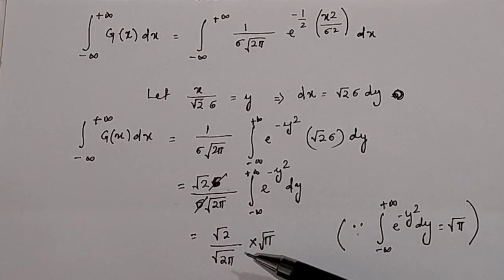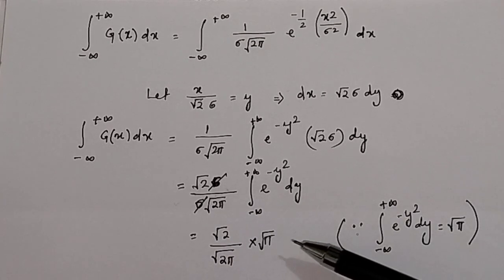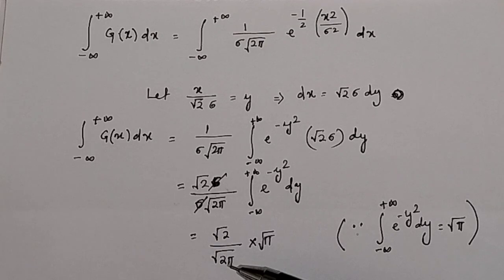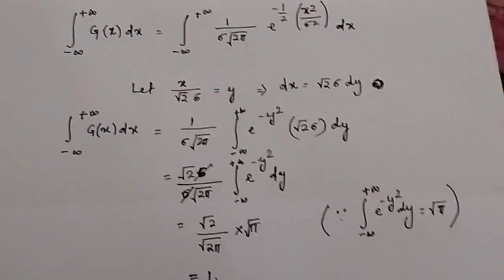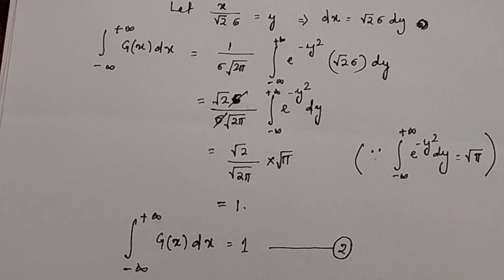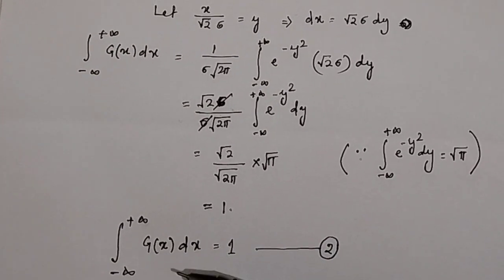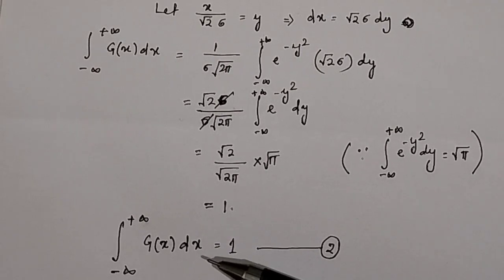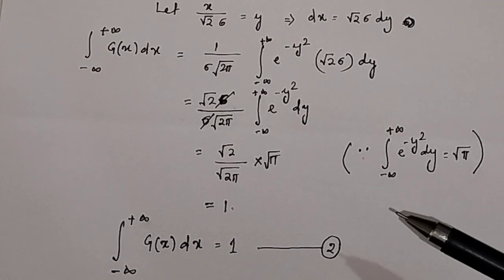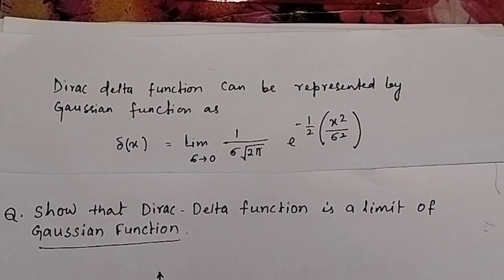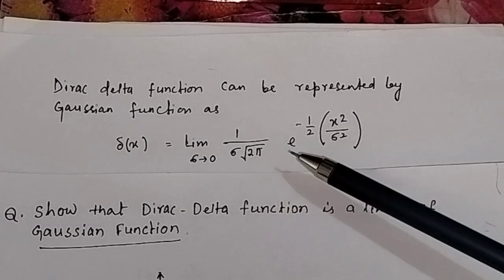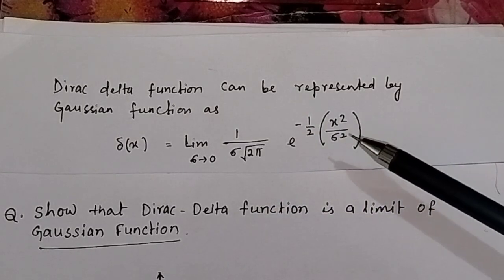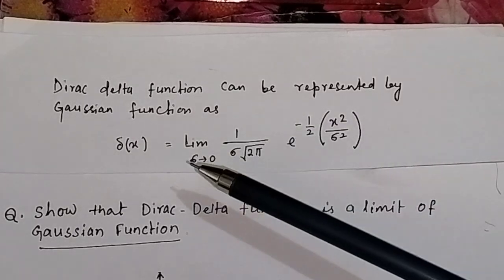In the numerator we have root 2 times square root of pi, divided by sigma times square root of 2 pi. These terms cancel, so the value equals 1. This proves that the integral from minus infinity to plus infinity of g(x) dx equals 1, confirming that the Dirac delta function is a limit of the Gaussian function.